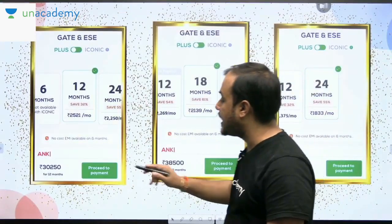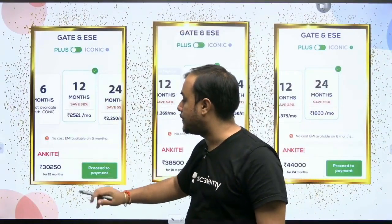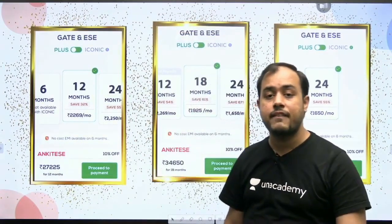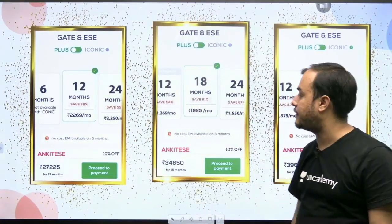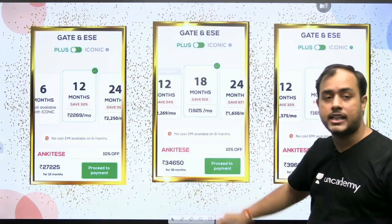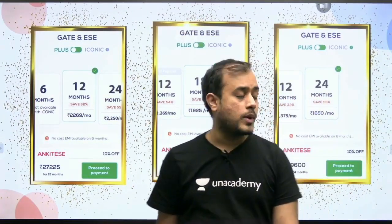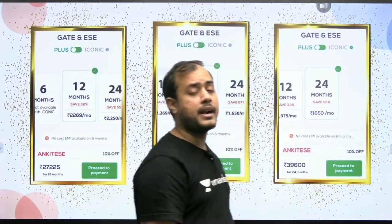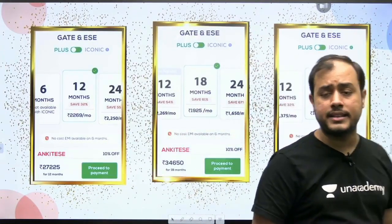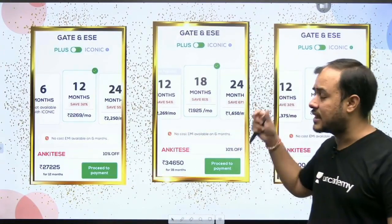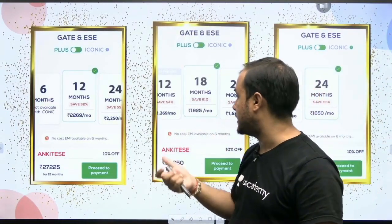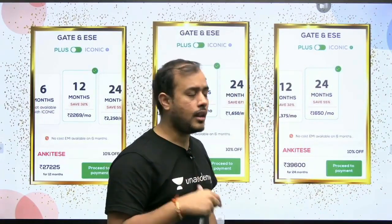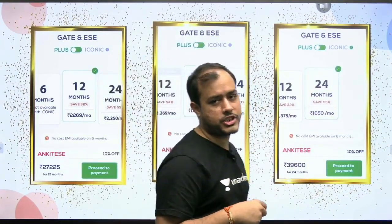For subscriptions: 12 months pricing is ₹32,500; with code Ankit ESE it becomes ₹27,225. For 18 months it is ₹34,650, and for 24 months it is ₹39,600. Longer duration subscriptions are more cost-effective — for example, the 24-month plan costs approximately ₹1,650 per month. For Iconic: 12 months is ₹52,500 (₹45,225 with code Ankit ESE), and a two-year subscription is ₹66,600.